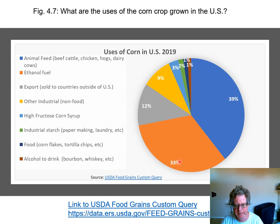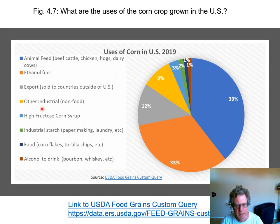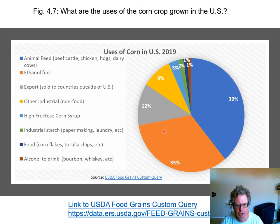Number two is ethanol fuel — they take the corn and ferment it into alcohol, which is added to gasoline in the wintertime here in Arizona. Number three is export — we grow corn very well, so a lot of it is shipped to other countries. High fructose corn syrup — that sweetener that makes everything sweet — is about three percent. Industrial starch is used in things like making paper. Food is only about one percent, and drinking alcohol is another one percent.